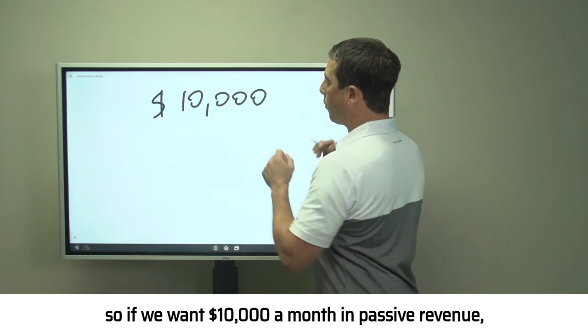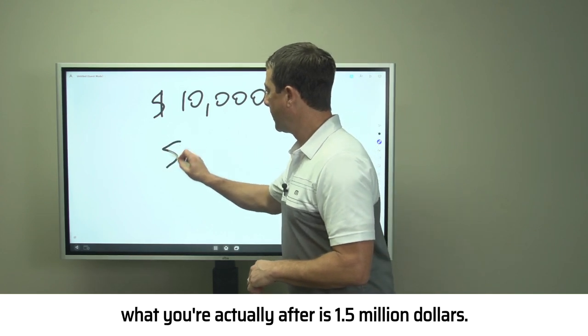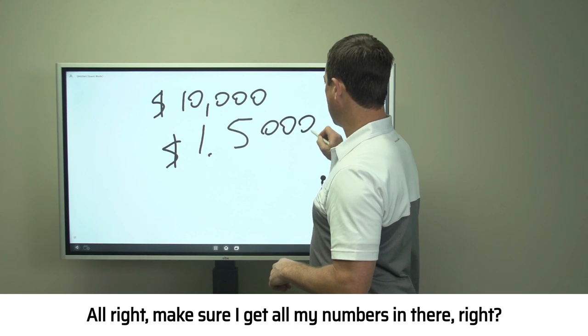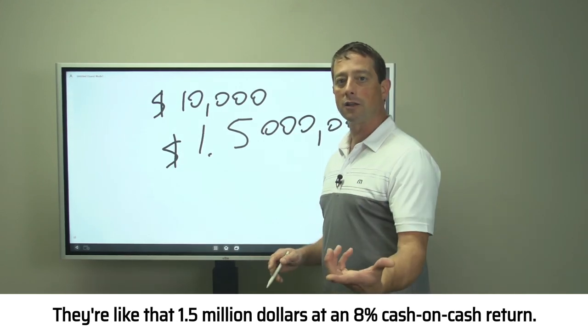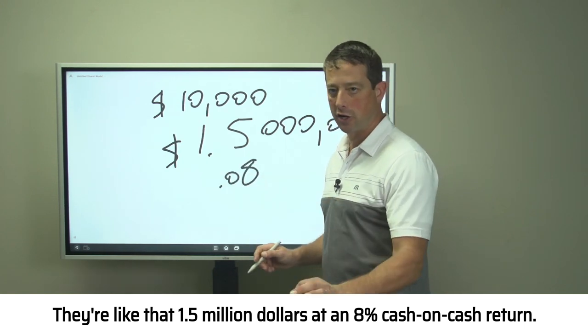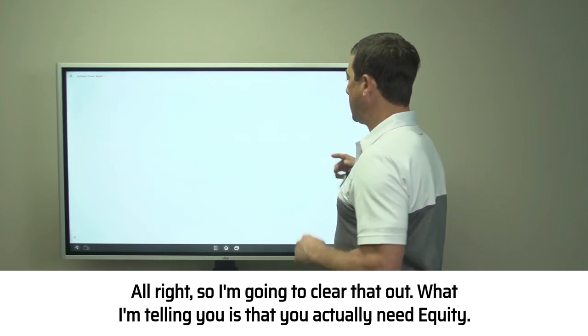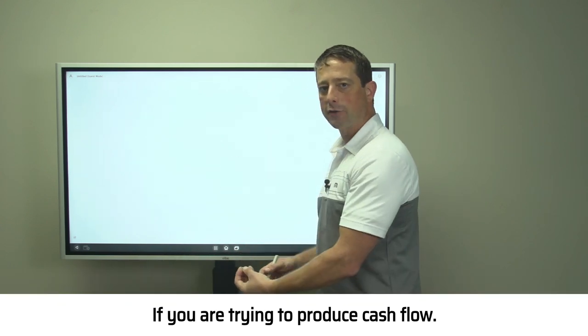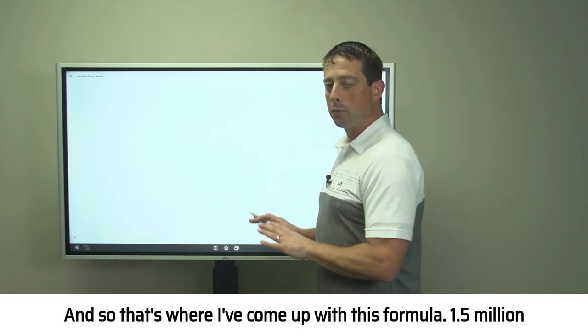If we want $10,000 a month in passive revenue, what you're actually after is 1.5 million dollars at an 8% cash on cash return. What I'm telling you is that you actually need equity if you're trying to produce cash flow. It's based on ownership in that asset. That's where I've come up with this formula.